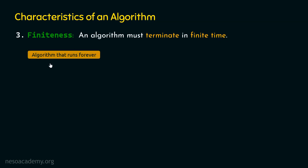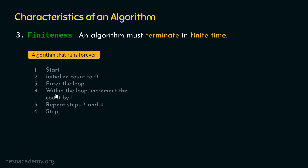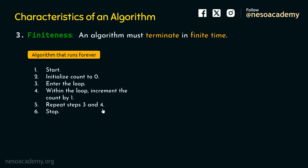Let's discuss an example algorithm that runs forever. In this algorithm, we first initialize count to zero. Then we enter a loop where we increment count by one. Step five says to repeat steps three and four, but we are not specifying when to stop this repetition. There is no termination criteria, so this algorithm will run forever. We keep entering the loop indefinitely, making this algorithm invalid.